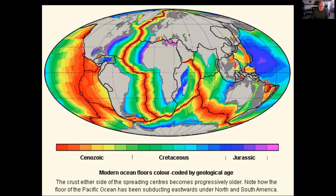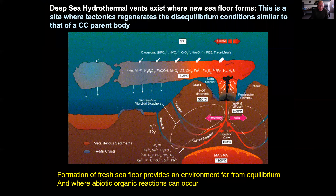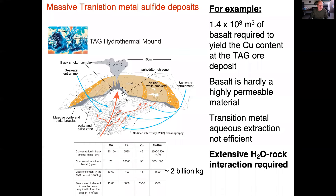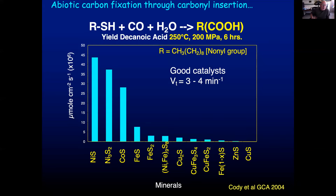If you homogenized the bulk silicate Earth completely, you would have no transition metal sulfides. You have to extract them through extensive water-rock interaction, which can occur at hydrothermal spreading centers across the ocean floor. Giant massive sulfide deposits can form this way — for example, the TAG hydrothermal mound, which contains something like two billion kilograms of transition metal sulfide ore. Enormous amounts of water-rock interaction are required to enrich transition metals to the point where pure sulfides can form.